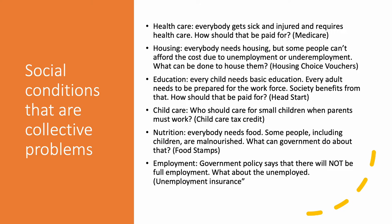The major areas include healthcare, housing, education, childcare, nutrition, and employment. These are everybody's problems at one stage or another in their lives. So we have government policies that are like safety nets — if private resources fail, there's a government program to catch people so that they don't just suffer and die or live in the street.